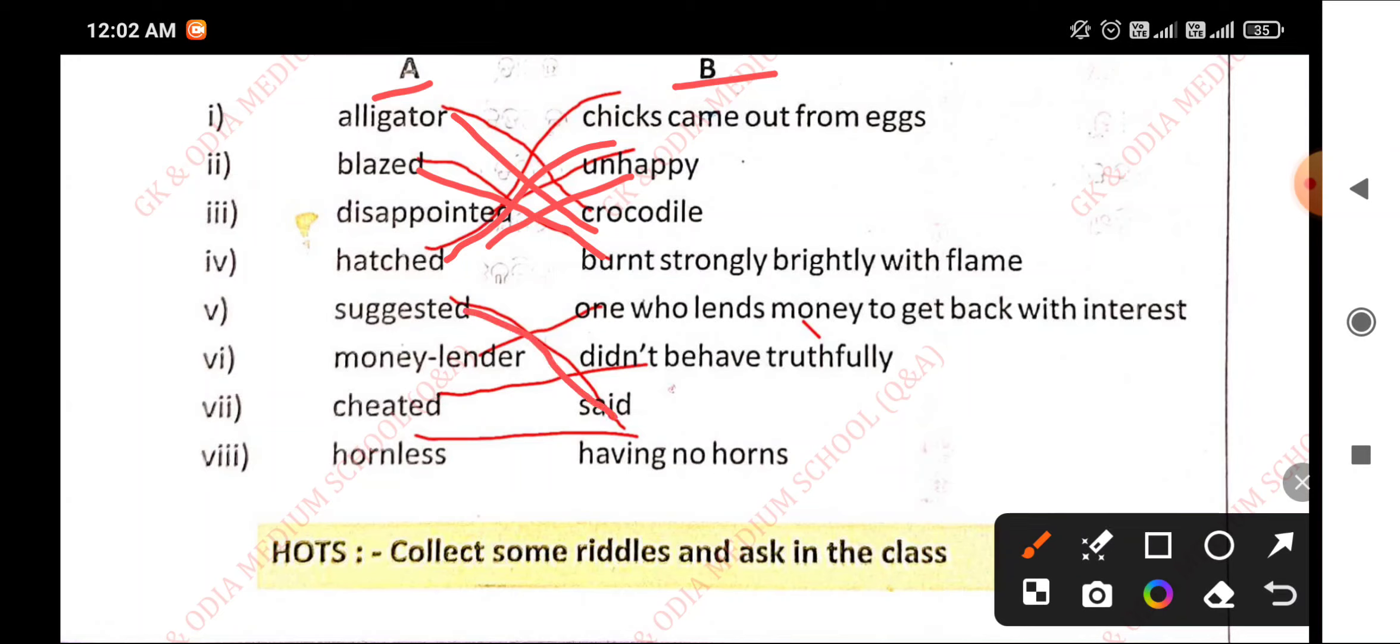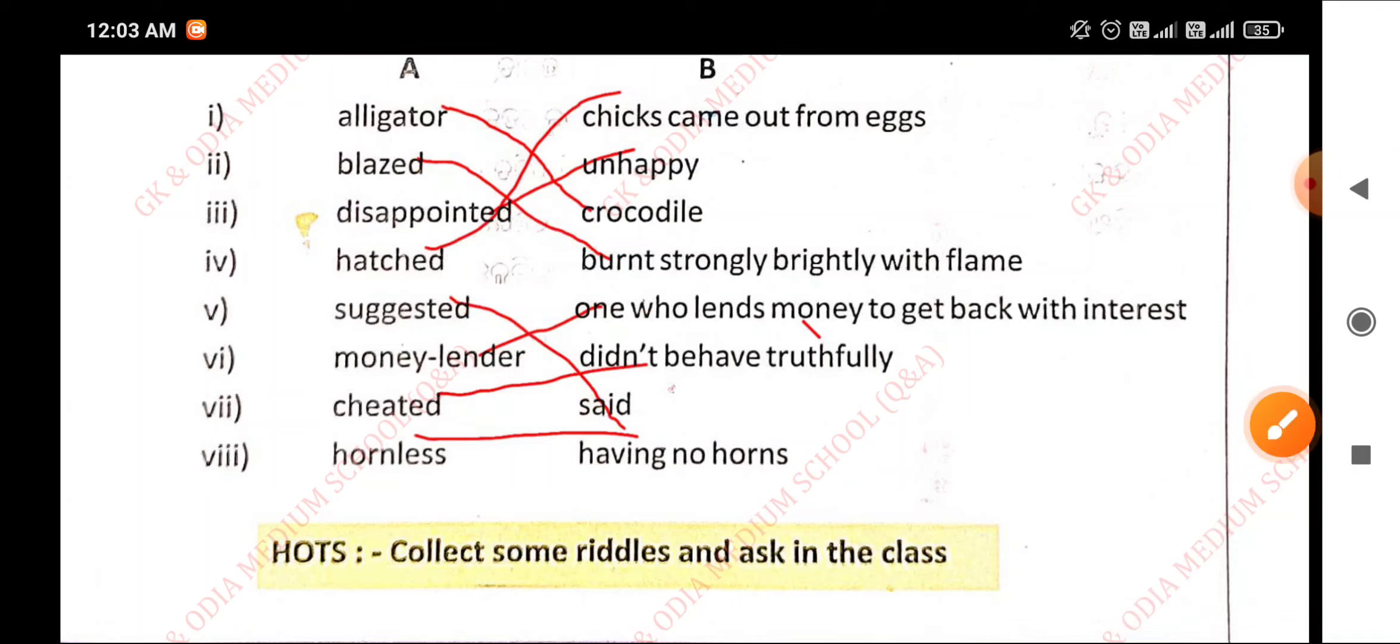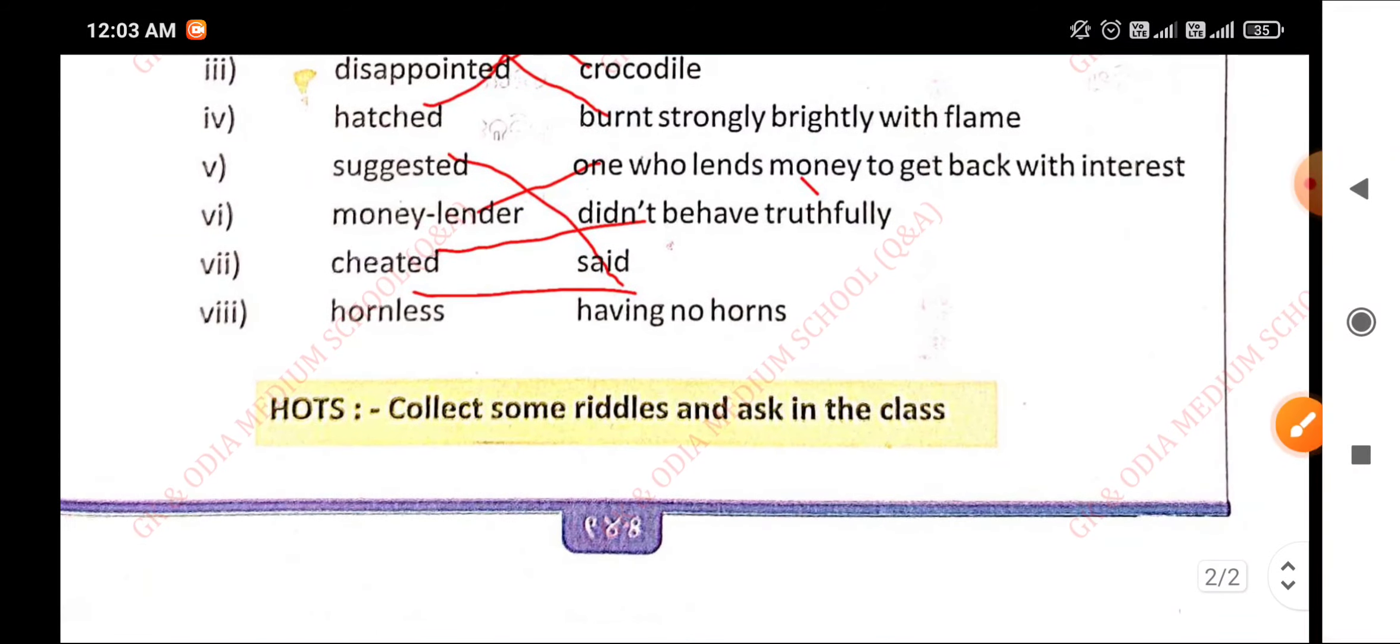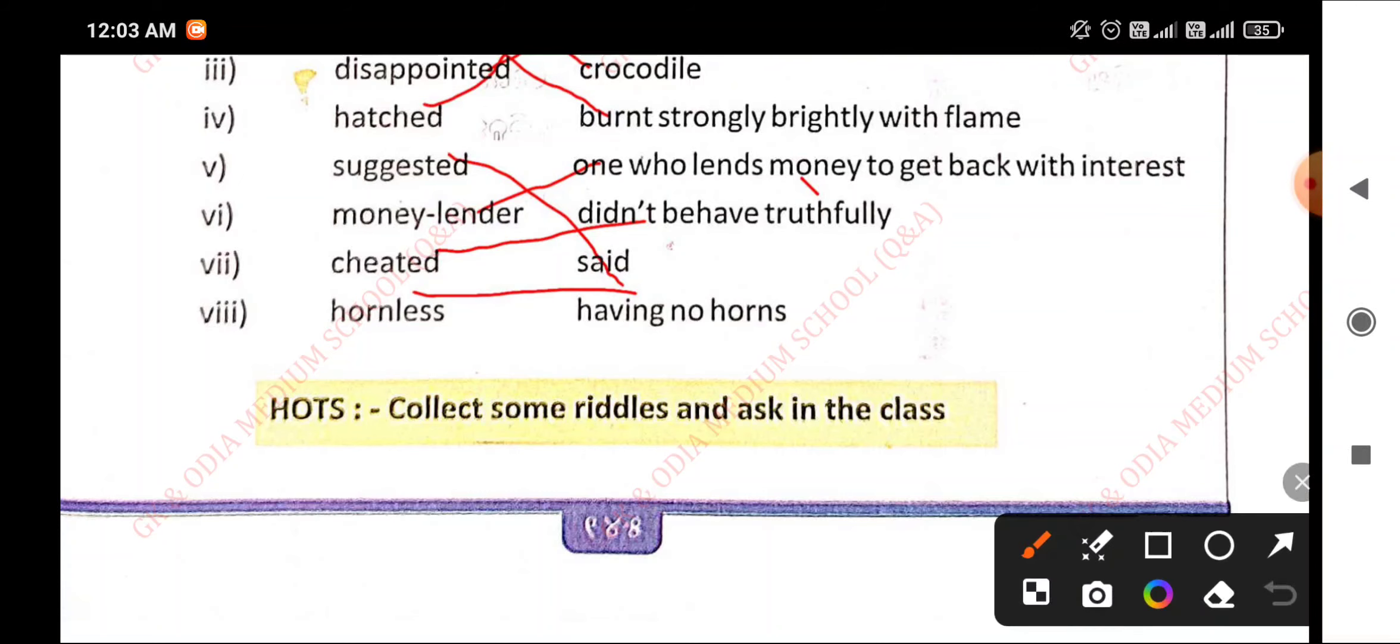Suggested means said, money lender means one who lends money to get back with interest, cheated means did not behave truthfully, hornless means having no horns. All answers are completed.